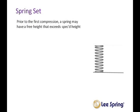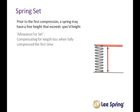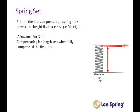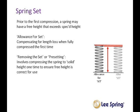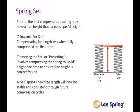Prior to the first compression, a spring's free height may be longer than the specified height. This is common during the manufacture of springs and can be compensated for in two ways. A spring can be built with a free length that has an allowance for set — this involves compensating for the length loss when a spring is fully compressed for the very first time. Another method is known as removing the set, also known as presetting or a set spring. This is an additional manufacturing step done by compressing the spring to the solid height. A set spring's new free length will then be stable and consistent throughout future compression cycles.